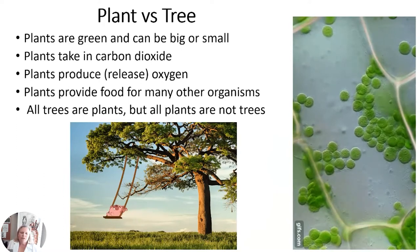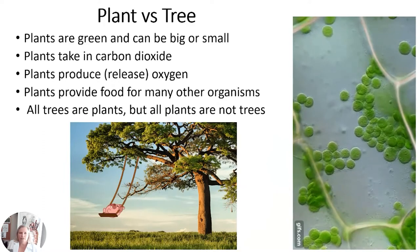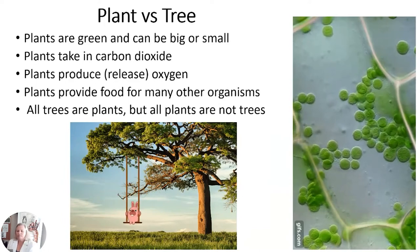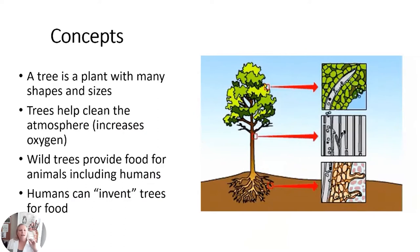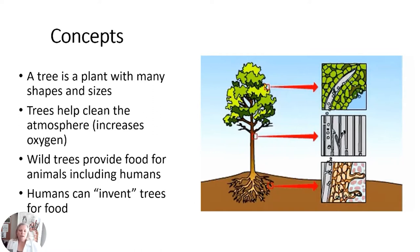All trees are plants but not all plants are trees. Our main ideas today: a tree is a plant that has many shapes and sizes. Trees help clean the atmosphere, increase oxygen, and help clean up CO2. They also provide lots of food for animals and humans — trees planted in our neighborhoods, yards, and parks provide food for wild animals too.